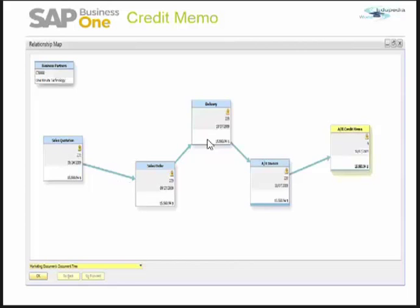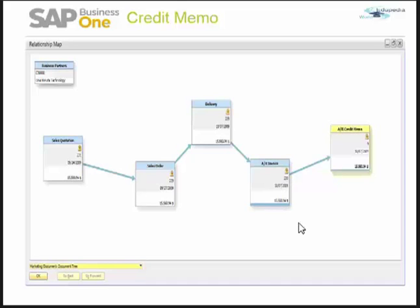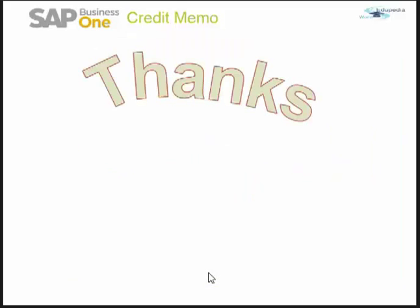We already know that we can copy the sales quotation to a sales order, sales order to delivery or AR invoice. In SAP Business One, you can also directly create an AR invoice and deliver goods at the AR invoice itself. SAP Business One also gives you the functionality of doing your banking on these documents as well, which saves the user time from creating all these individual documents. Thank you.